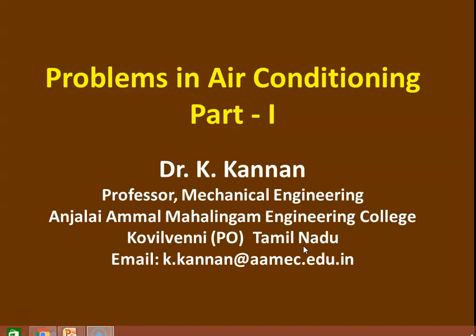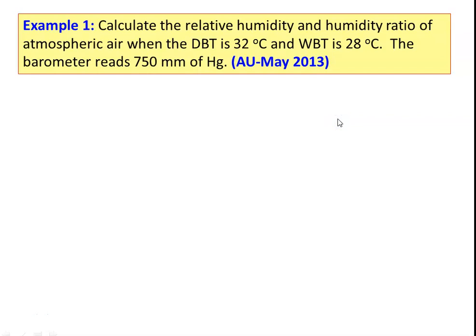We solve a few problems here. Mostly the problems are repeatedly asked in the university examination. The first example: calculate the relative humidity and the humidity ratio of air when the dry bulb temperature is 32°C and wet bulb temperature is 28°C. The barometer reads 750 millimeters of mercury, meaning the atmospheric pressure is 750 mmHg. We have to calculate relative humidity and humidity ratio.